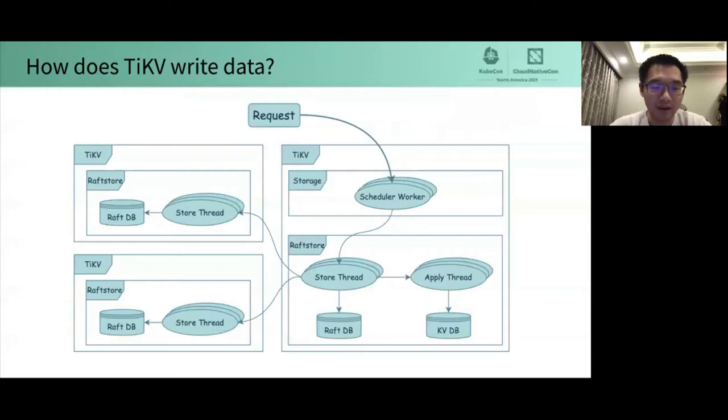RaftStore is a consensus layer of TiKV. It uses Raft consensus algorithm to make TiKV fault tolerant. RaftStore has two thread groups, that is store threads and apply threads. Store threads are responsible for handling Raft message and new proposals. When receiving a new proposal, store threads will write it to RaftDB and send a message to others. After this proposal is committed, it will be sent to apply threads, which will save it to KVDB. Then, apply threads will call back to notify the outside that the request is written successfully.